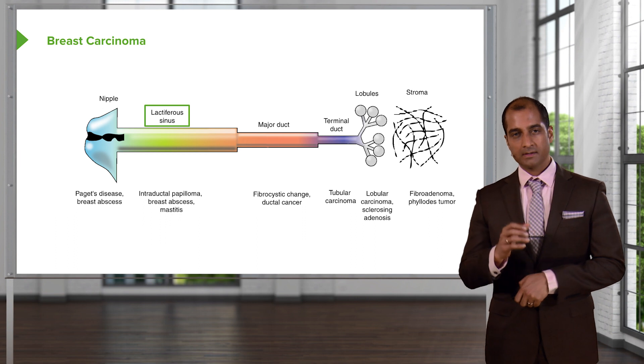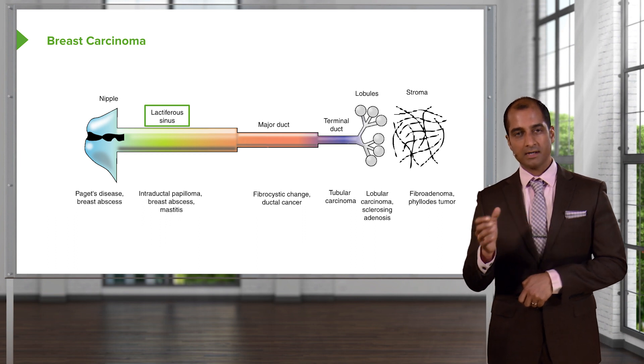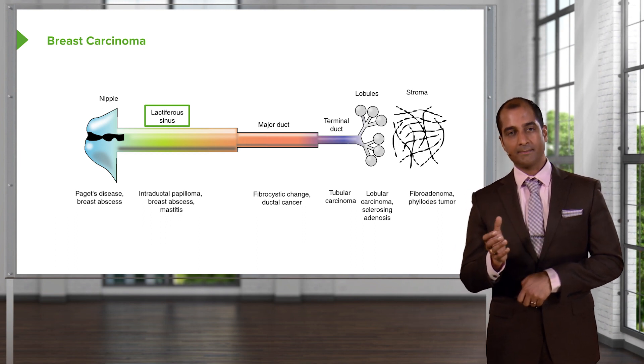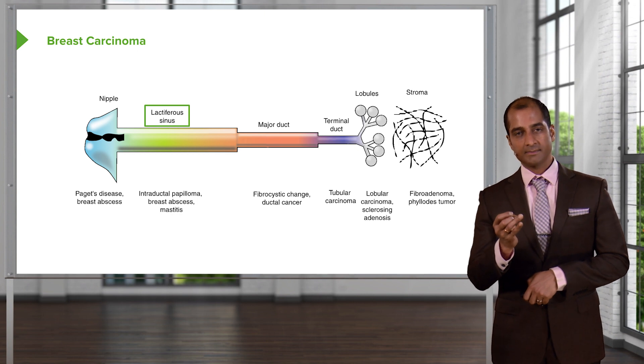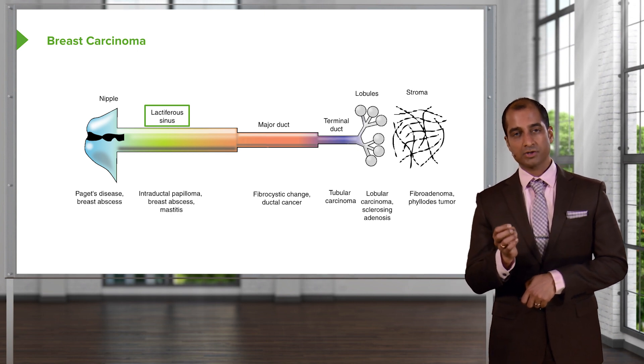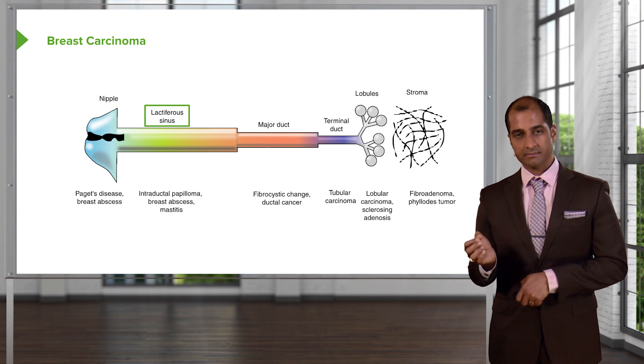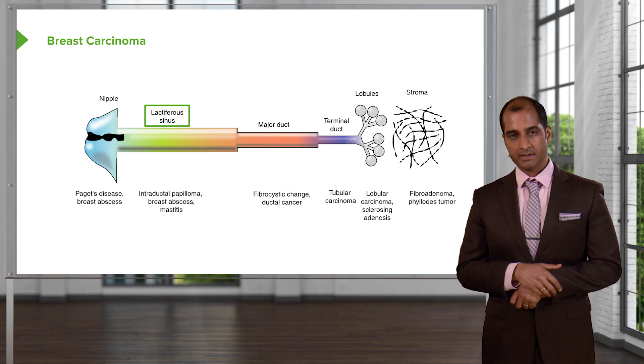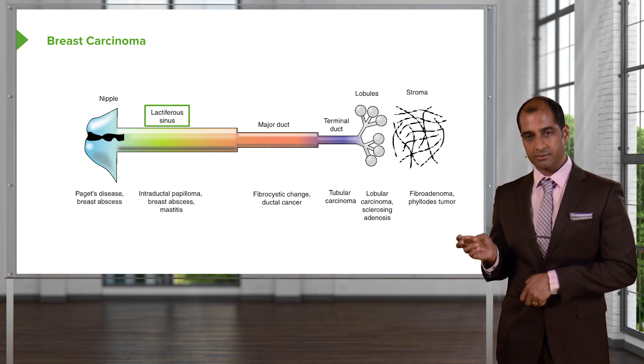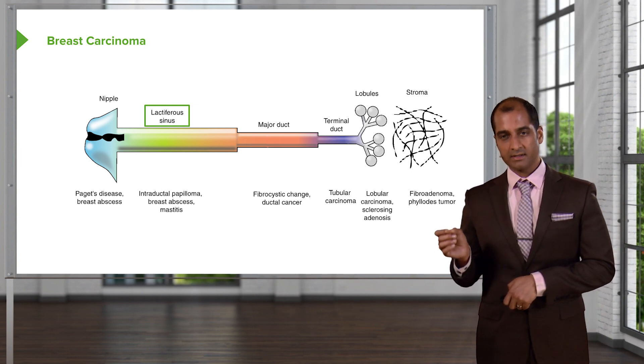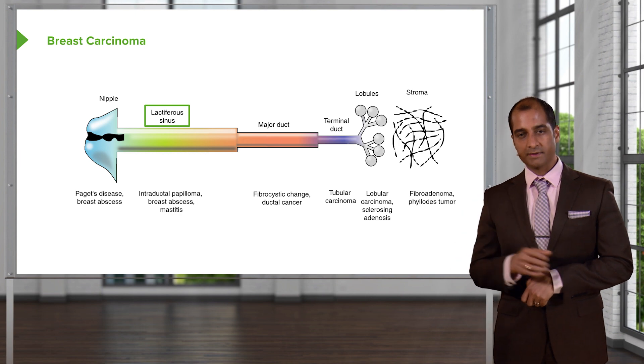Phyllodes tumor. Age range: elderly, postmenopausal, commonly sixth decade. Tell me the size of the tumor. Small or large? Large. What about its increased risk of cancer? Much greater than fibroadenoma. I asked you kindly to make sure that you compare and contrast phyllodes and fibroadenoma. I've just given you brief little points.